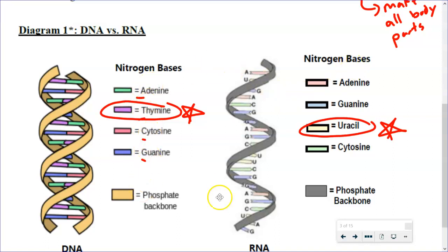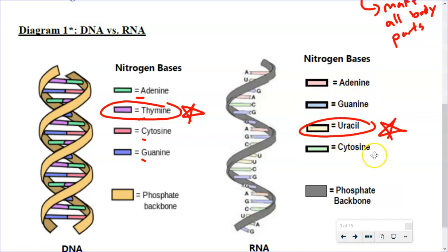In the RNA, which is located on the right side here, there's a different base. Instead of thymine, we're going to use the base uracil, but the other three are the same.